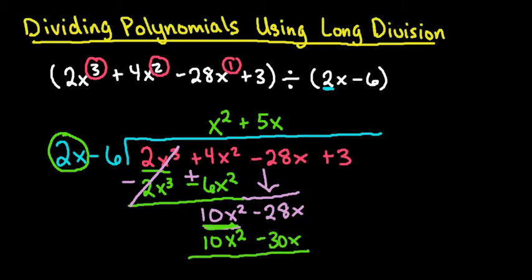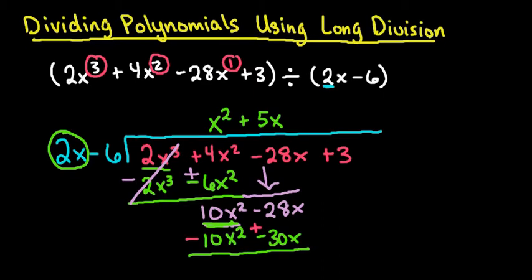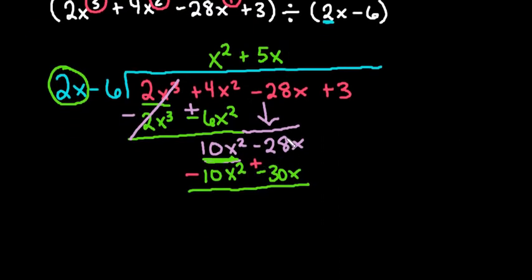And then again, we are going to subtract. So when we subtract this, I would change the signs of both. And this term would cancel out and this would leave me with 2x. And then I have to bring down the last term, so I have plus 3.